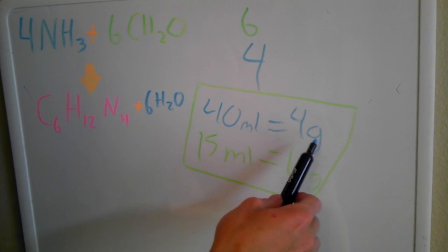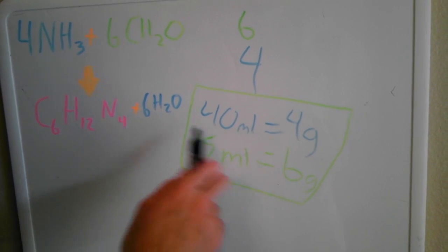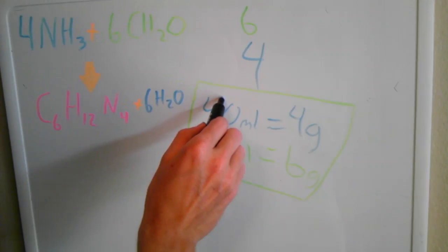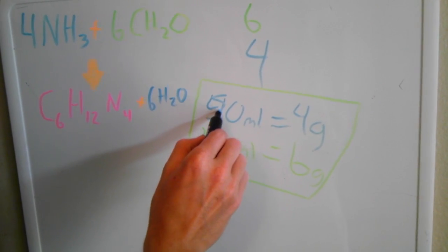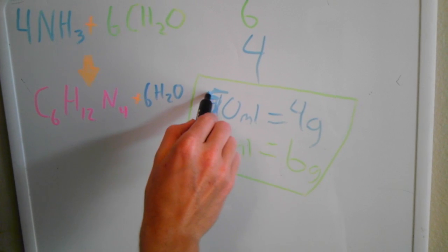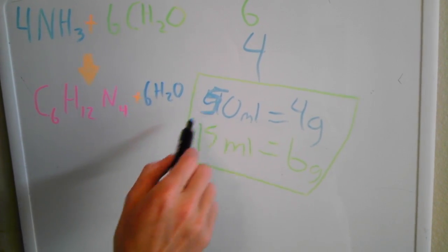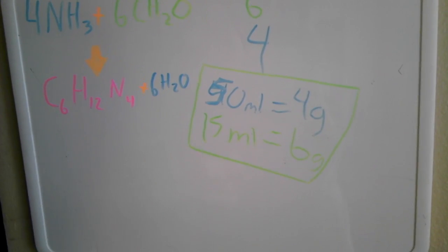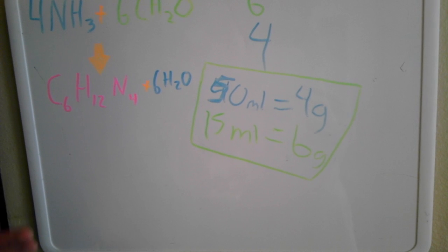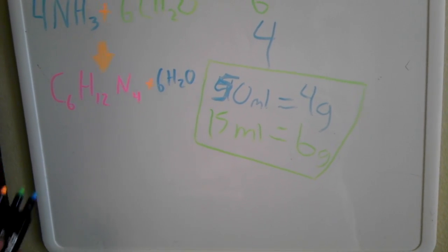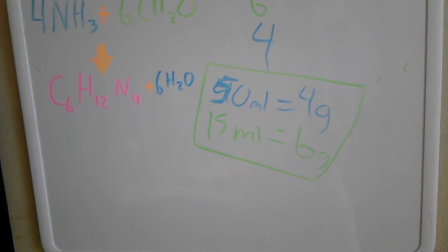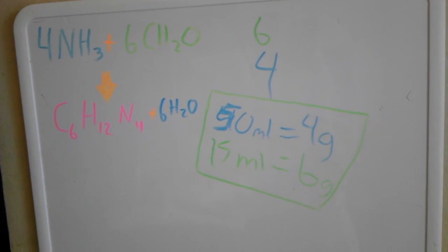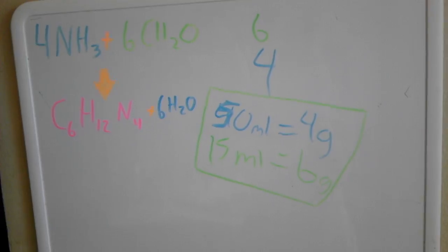You always want to make sure that the ammonia is in excess. So instead of 40 milliliters, I did 50 milliliters, which gives you 5 grams. That's just because you don't want your house to smell like formaldehyde. So that is what's going on here.